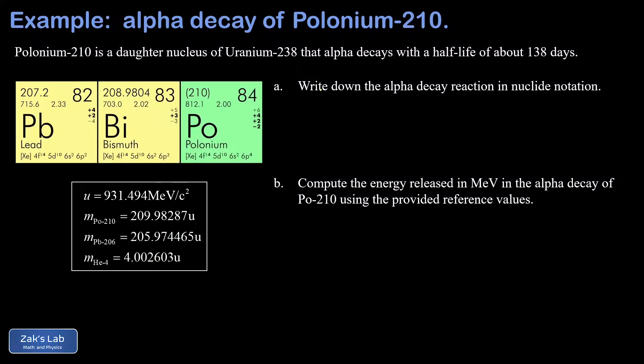In this video, we're looking at the alpha decay of polonium-210. We're told a little bit of background information about polonium-210. It's part of the uranium-238 decay series, one of the daughter nuclei in that decay series, and it has a half-life of about 138 days.